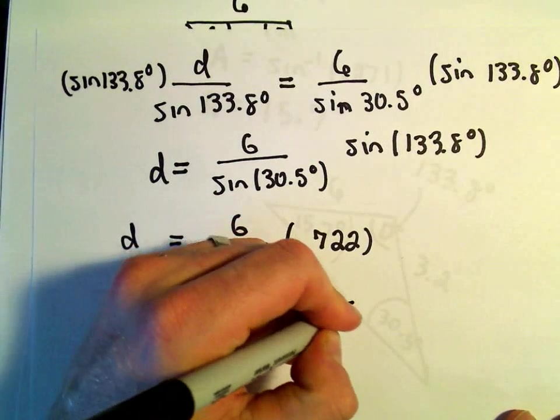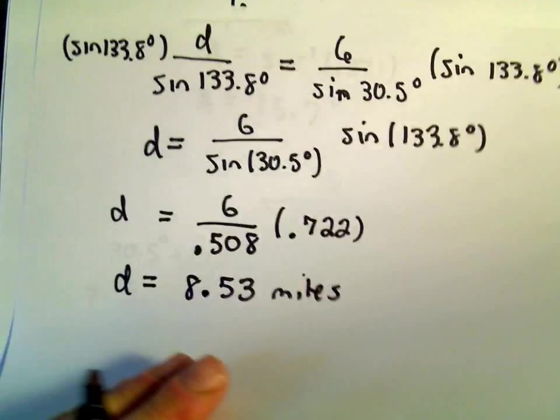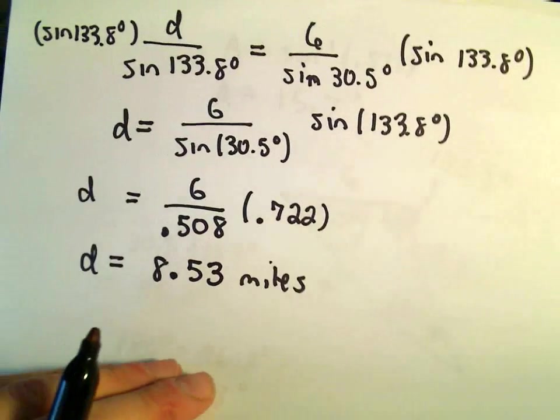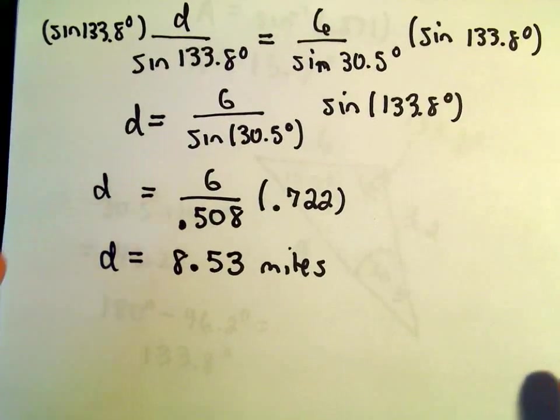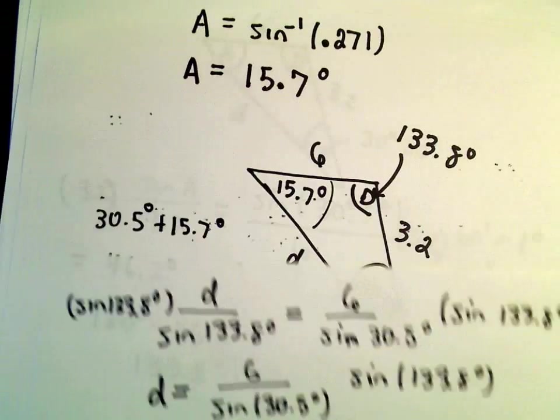So 6 times .722, and then we can divide all of that by .508. I'm getting that to be 8.53 after rounding. So I think everything originally was in miles.